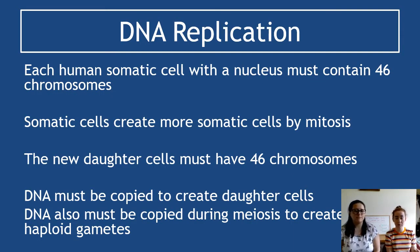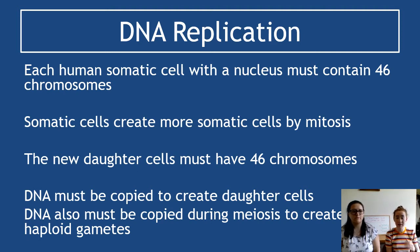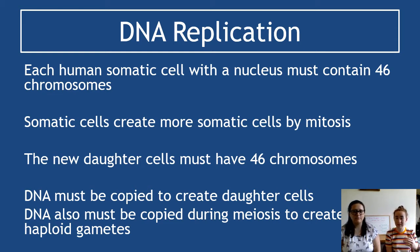In terms of DNA replication, hopefully this idea isn't new — it's something touched on in National 5. Each somatic cell has a nucleus containing 46 chromosomes. You've just done a task on mitosis, discussing what needs to happen, and one of the very first things is that the DNA has to replicate itself. Somatic cells produce more somatic cells by mitosis, starting with 46 chromosomes and ending with 46.